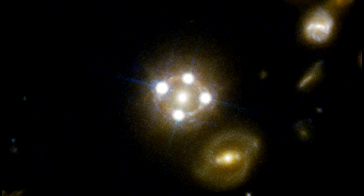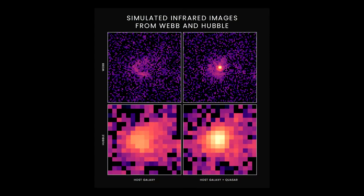Although quasars are known to reside at the centers of galaxies, it's been difficult to tell what those galaxies are like and how they compare to galaxies without quasars. The challenge is that the quasar's glare makes it difficult or impossible to tease out the light of the surrounding host galaxy. It's like looking directly into a car headlight and trying to figure out what kind of automobile it is attached to.